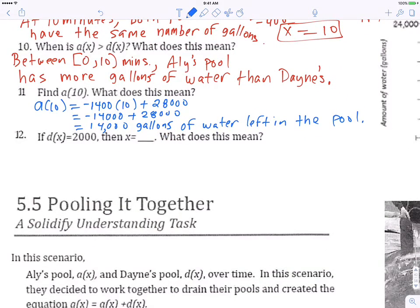So that just means at 10 minutes, there's 14,000 gallons of water left in the pool.